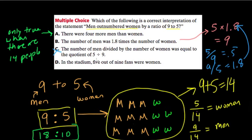D says in the stadium, 5 out of 9 fans were women. That would be true, except it's not out of 9. It's 5 out of 14. So D is out. So I feel like B is our best choice here, because A is only true in one case. So for this question, I would definitely pick B.